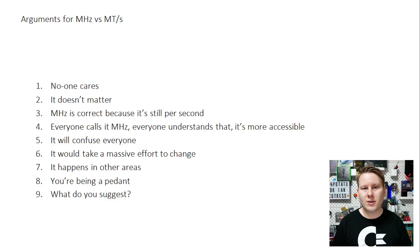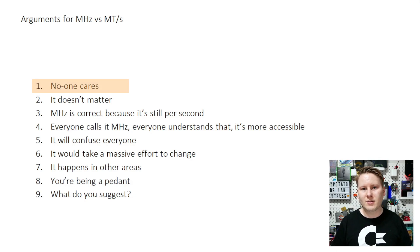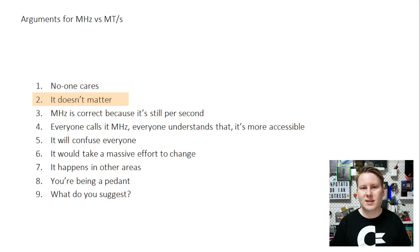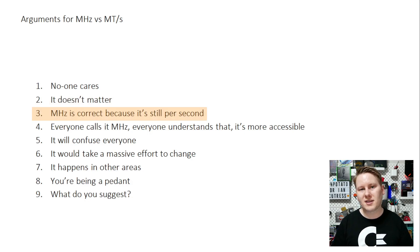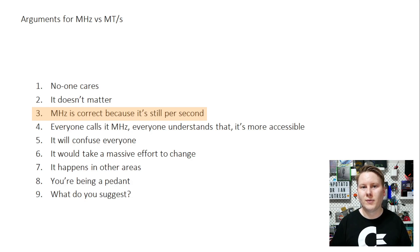I've collated all the comments from my Twitter post and Linus's viewers from the WAN show, and summarized them into nine specific points. Point one: no one cares. Well, if no one cares, then you don't mind me changing everything to mega transfers per second. Point two: it doesn't matter. If it doesn't matter, then you don't mind everything changing to mega transfers per second. Point three: megahertz is correct because it's still per second. I think I've addressed this — hertz is a cycle per second, and on memory you're not doing a transfer on every rising and falling edge of the clock cycle. The clock is consistent, that's why it has hertz. Mega transfers per second is a theoretical maximum; because transfers don't occur every cycle, it's not a cyclical nature, and therefore it's not a hertz measurement.